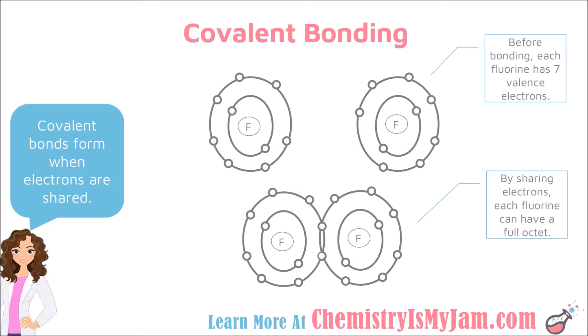In previous videos, we have looked at ionic bonding, where an electron has been transferred. That works well when you have a metal and a nonmetal. However, it does not work well in a case like fluorine where you have two nonmetal atoms coming together. In the case where you have two nonmetal atoms coming together, a covalent bond will be formed where electrons are shared.